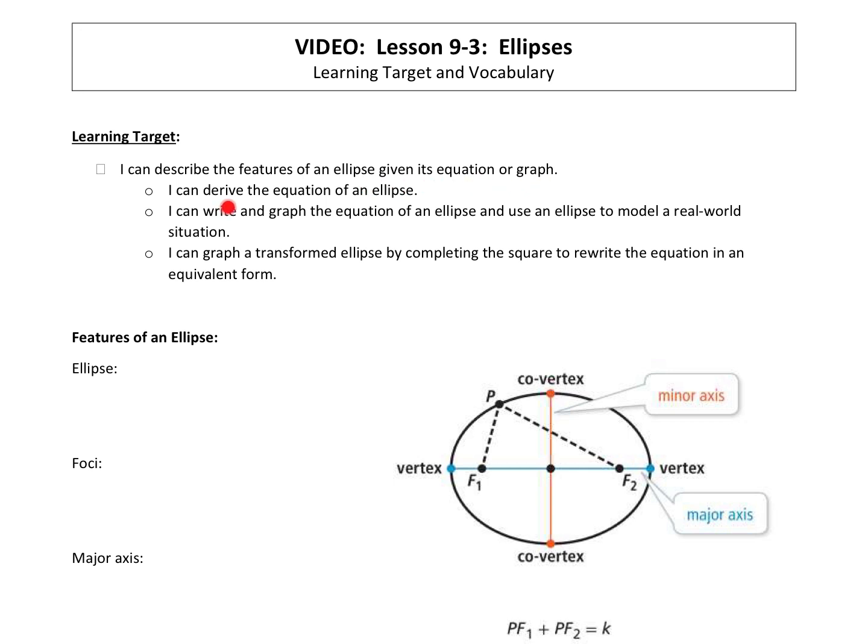We'll be able to derive the equation from an ellipse. We will write and graph the equation of an ellipse and use an ellipse to model a real world situation. We'll be able to graph a transformed ellipse by completing the square to rewrite the equation in an equivalent form.